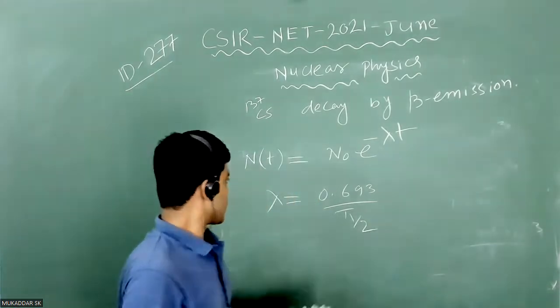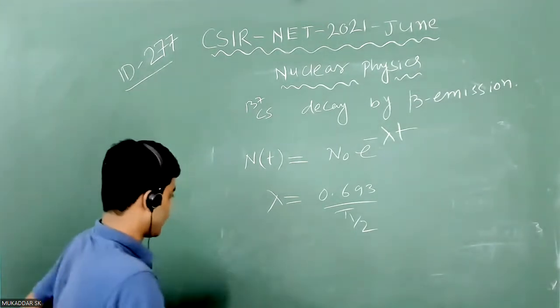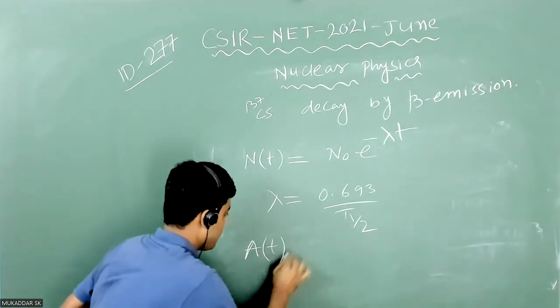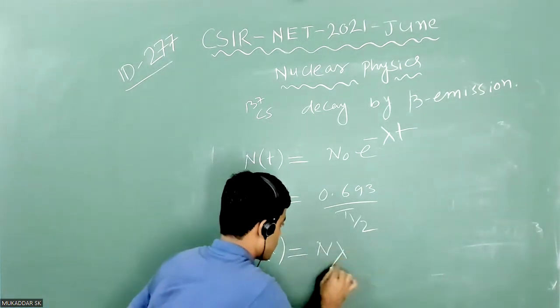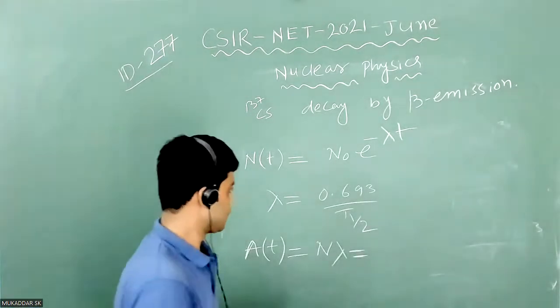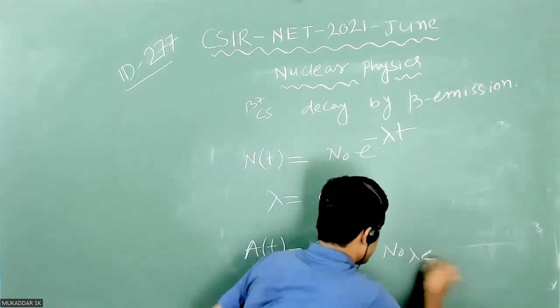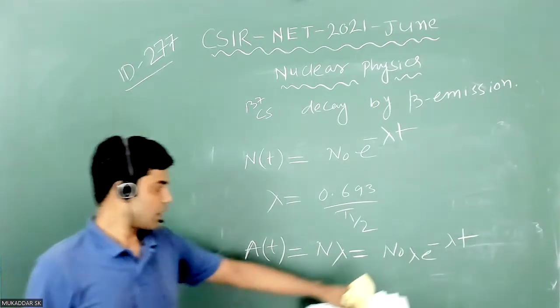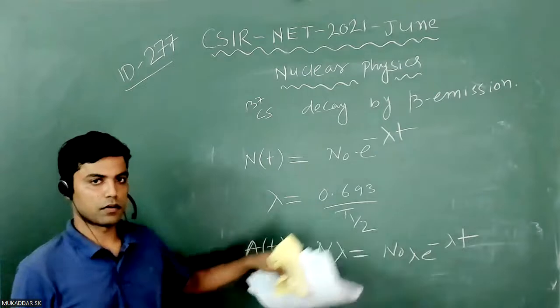Now we will apply the activity formula. Activity of a sample as a function of time is A(t) = Nλ = N₀λe⁻λt. We will substitute N₀ and lambda as a function of t₁/₂.